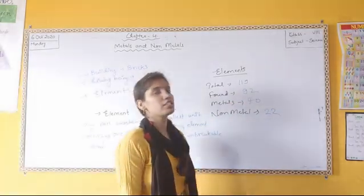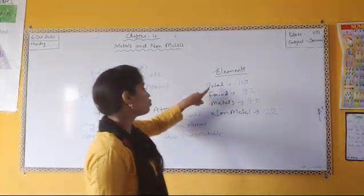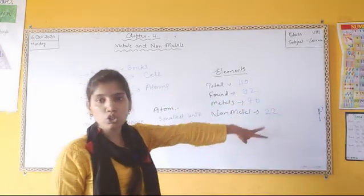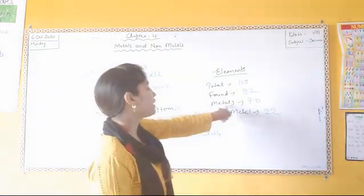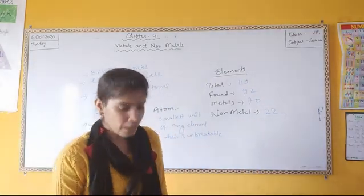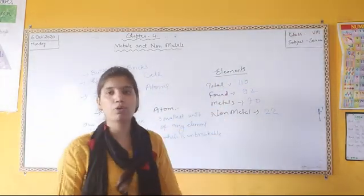Total 119 elements - out of these, 92 have been found, of which metals are 70 and non-metals are 22. This is our information about the elements.